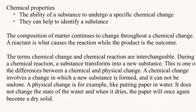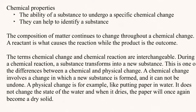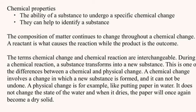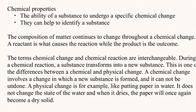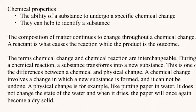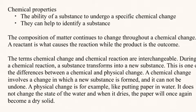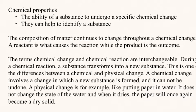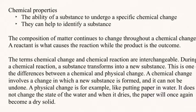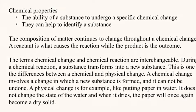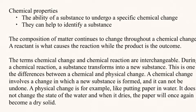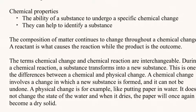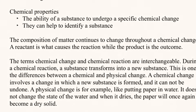During a chemical reaction, a substance transforms into a new substance. This is one of the differences between a chemical change and a physical change. A chemical change involves a change in which a new substance is formed and it cannot be undone. A physical change, for example, is like putting paper in water — it does not change the state of the paper, and when it dries, the paper will once again become a dry solid.